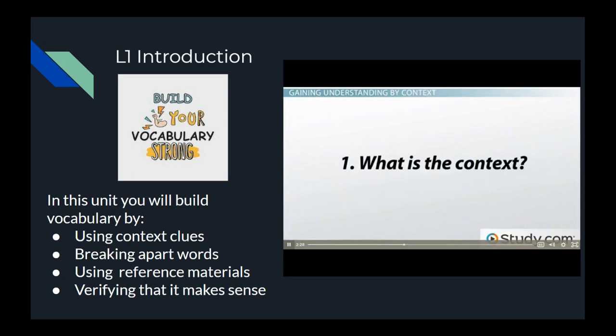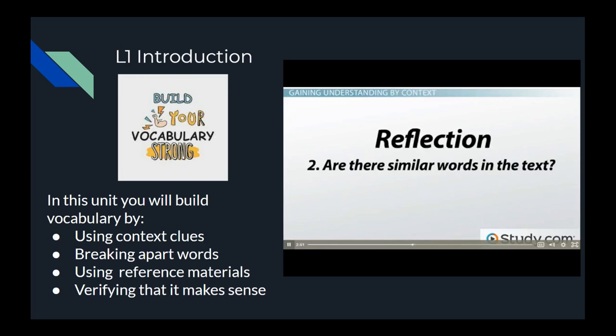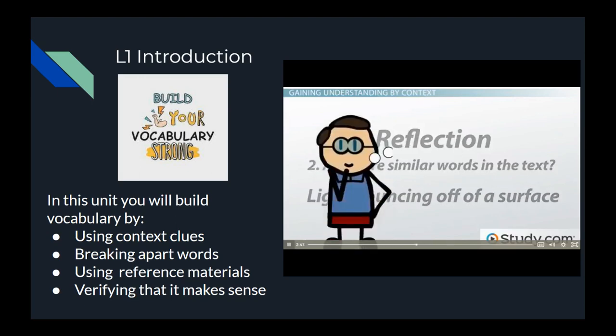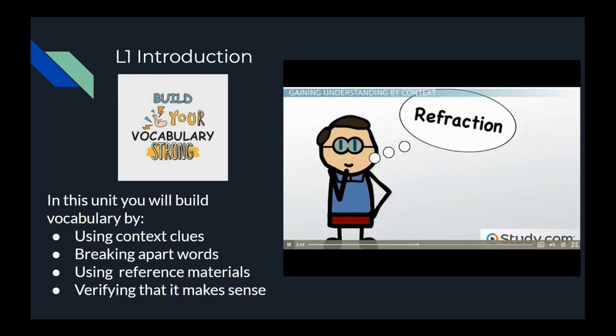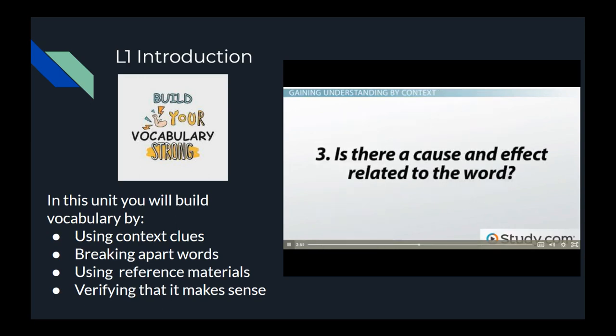One, what is the context? This text is about sunlight, water, fish, and coral reefs. Two, are there similar words in the text? Reflection looks a lot like refraction. We know reflection means light bouncing off of a surface. I bet refraction has something to do with light. Three, is there a cause and effect related to the word? Jeremy can see the coral reefs because of refraction.